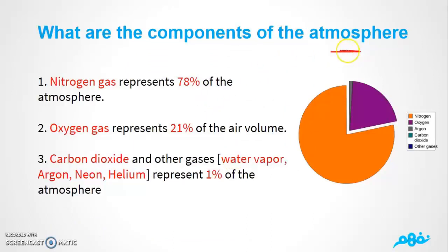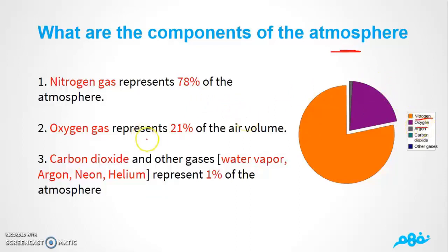What are the components of the atmosphere? We have a mixture of gases. Looking at the picture, the majority is nitrogen gas, which represents 78% of the atmosphere. After that, we notice there are other gases such as carbon dioxide, water vapor, argon, neon, and helium, which together represent 1% of the atmosphere.